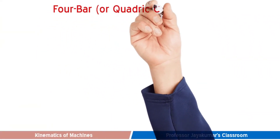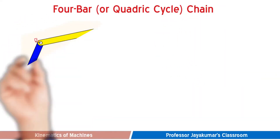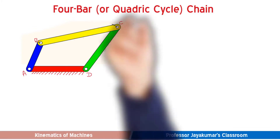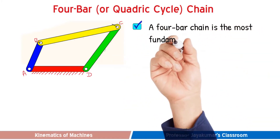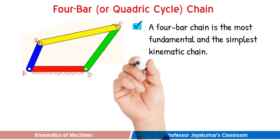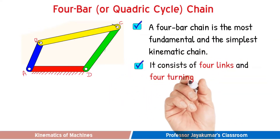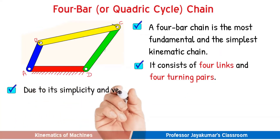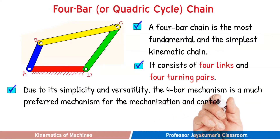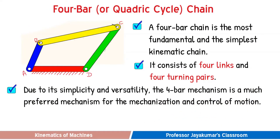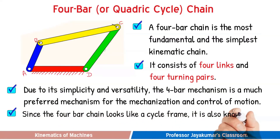What is a four bar chain? In fact, the four bar chain is the most fundamental and the simplest kinematic chain. As you could see in the diagram, this four bar chain consists of four links and four turning pairs. Due to its simplicity and versatility, this four bar chain is a much preferred mechanism for the mechanization and control of motions. So many mechanisms are built upon this four bar kinematic chain. Since the four bar chain looks like a cycle frame, it is also popularly known as quadric cycle chain.